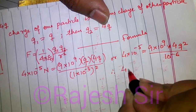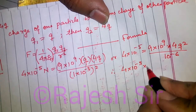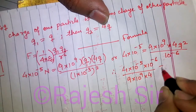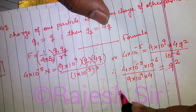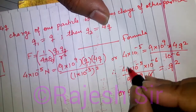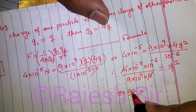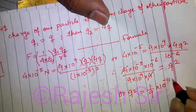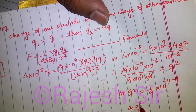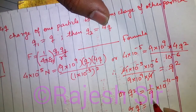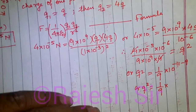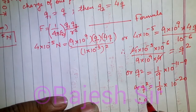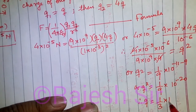Rearranging: 4 into 10 to the power of minus 6 upon 9 into 10 to the power of 9 into 4 equals q squared. Therefore q squared equals 1 by 9 into 10 to the power of minus 20.